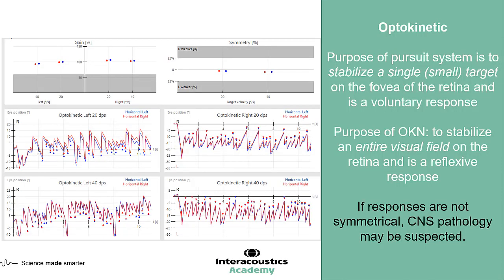This assesses whether the patient is able to initiate those eye movements appropriately and symmetrically. Here is an example of some of those recordings within our software, which allows us to quantify the slow phase velocity of those eye movements and establish whether we have equal gain — does the eye move to the correct degree of movement both right and left — and we can look at different velocities, such as 20 or 40 degrees per second, in both directions.